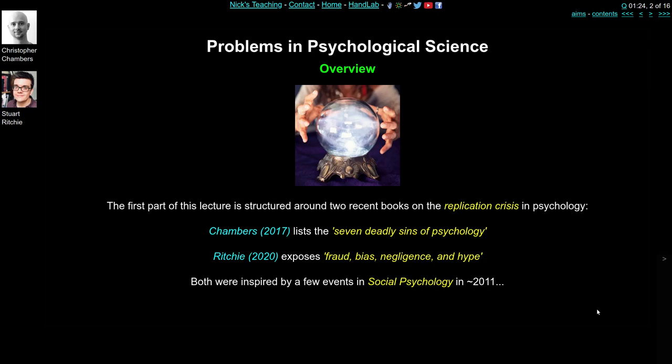Chris Chambers in his 2017 book talks about the seven deadly sins of psychology — seven domains of study or practice where things are not quite the way they should be. Stuart Ritchie's book, out just in March of this year, does a very similar thing but looks a bit wider across science in general, looking for evidence of fraud, bias, negligence and hype. Both books cover a period almost entirely focused in the last 10 years, since about 2011.